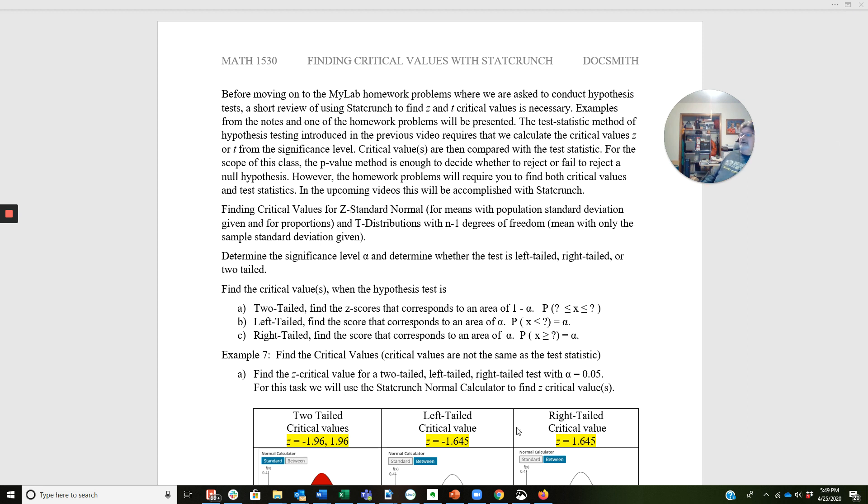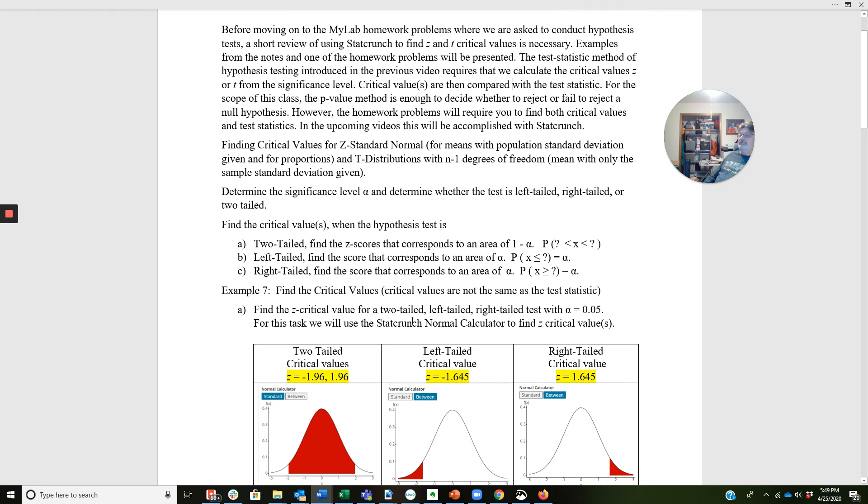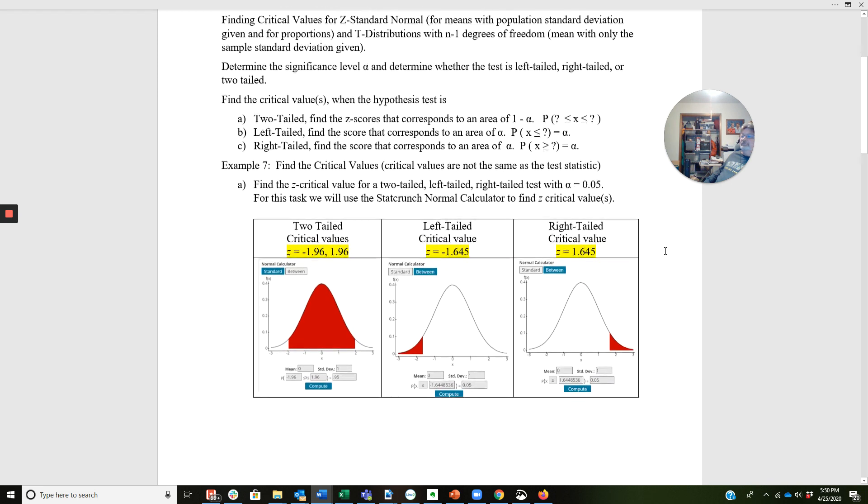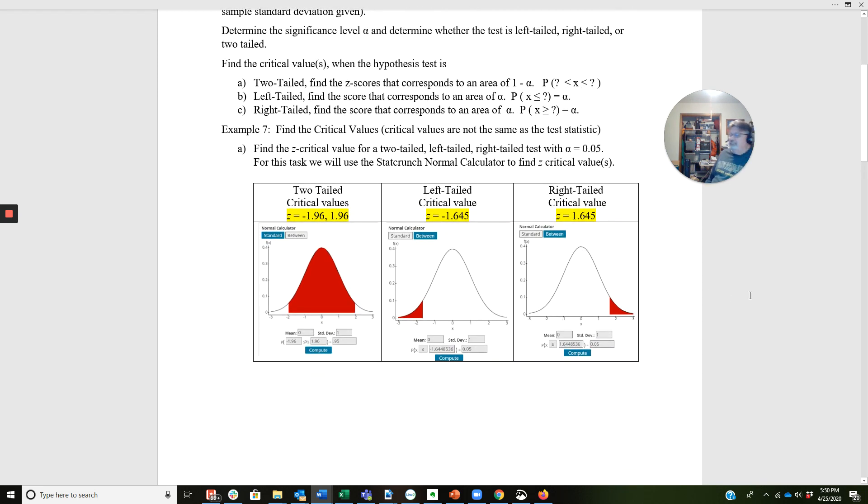So find the critical values when the hypothesis test is two-tailed, left-tailed, or right-tailed. For part A, find the Z critical value for a two-tailed test with alpha equals 0.05. For this stat task, we will use the StatCrunch normal calculator to find the Z critical values. I have the images pasted in from using the standard normal calculator. Hopefully everybody's comfortable with that at this point.